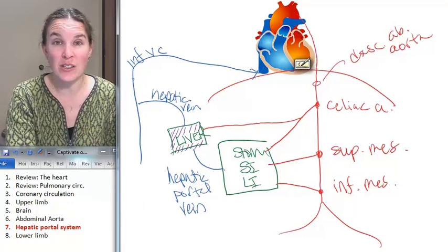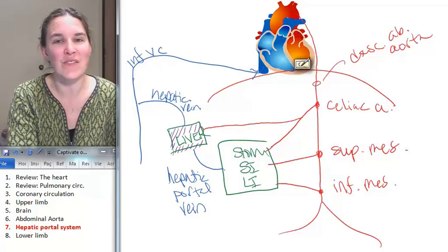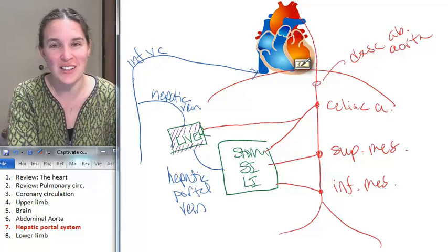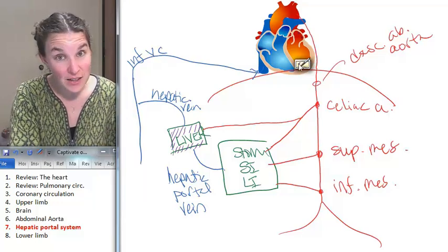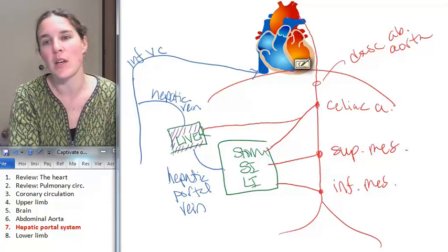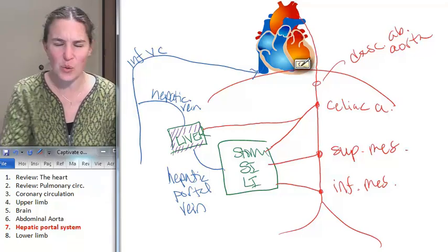The hepatic vein takes the old blood. It's been filtered, has a lot of nutrients in it, and sends it to the inferior vena cava where it goes up to the lungs to get new oxygen, back to the left side of the heart and out to the body where it will deliver all those great nutrients that it picked up to the body. How cool is that?